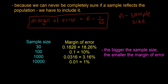If the sample size is 100, then the margin of error is 0.1, or 10%. If the sample size is 1,000, then the margin of error goes down to 3.16%. And if the sample size is 10,000, then the margin of error goes down to only 1%.